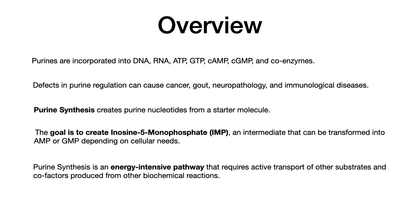The overall goal of de novo purine synthesis is to create inosine 5-monophosphate, otherwise known as IMP. IMP is an intermediate that can be transformed into either AMP or GMP depending on cellular needs, and those individual substances will go on to selectively create the nucleotides you want. Additionally, purine synthesis is an energy-intensive pathway requiring active transport of substrates and cofactors from other biochemical reactions.